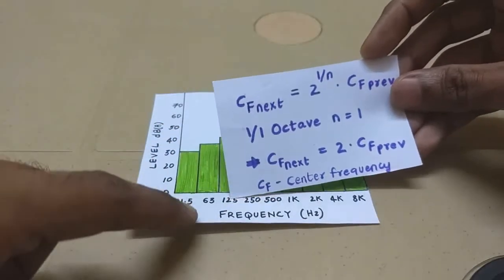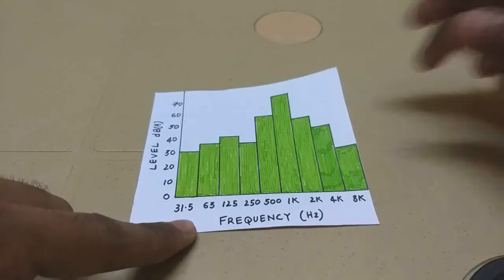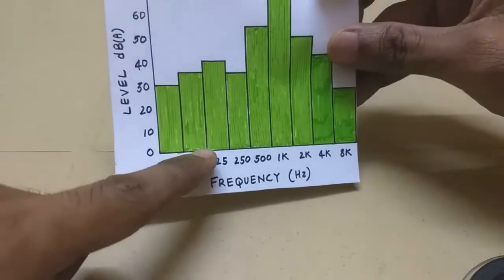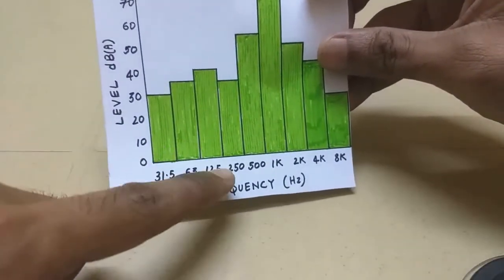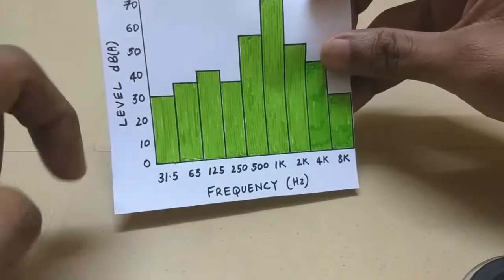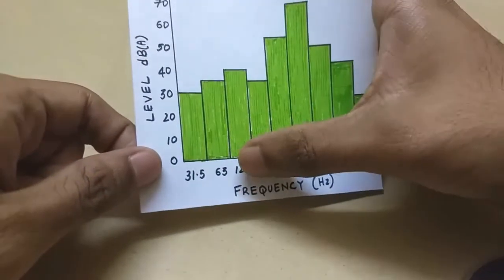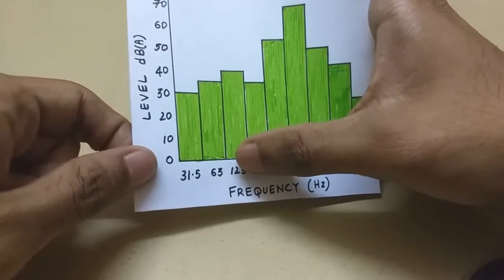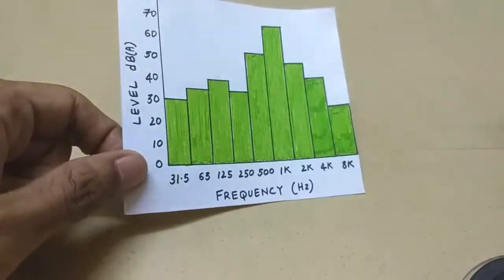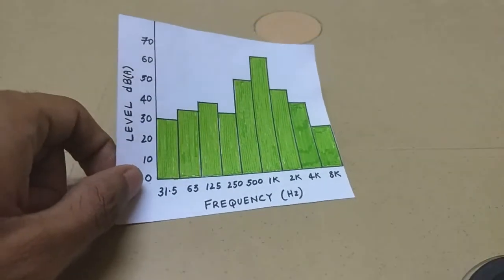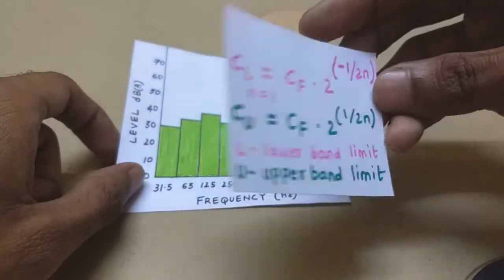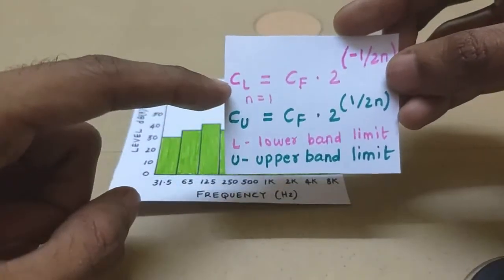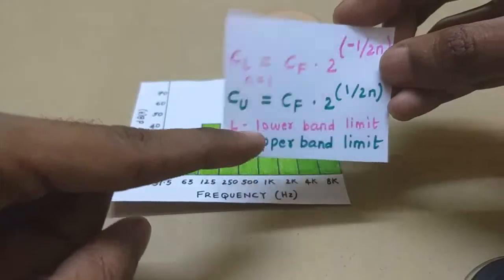Alright, so this is center frequency. Now the next analysis is the upper and lower limits of a particular band. For example, let's say we have 125 Hz as the center frequency. Now we need to know what is the upper and the lower limit. There is another relation for that. So this is the lower limit, lower band limit, and this is the upper band limit.